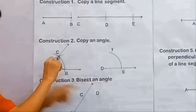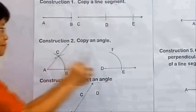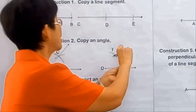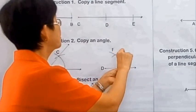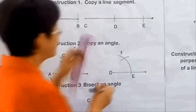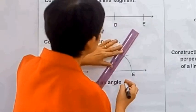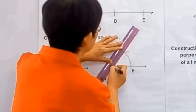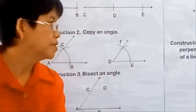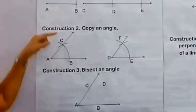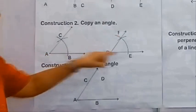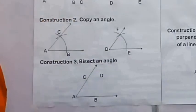From point E, we move the compass point and swing an arc at F. Then we connect to point F. Therefore, angle CAB is congruent to angle FDE. We have copied the angle.